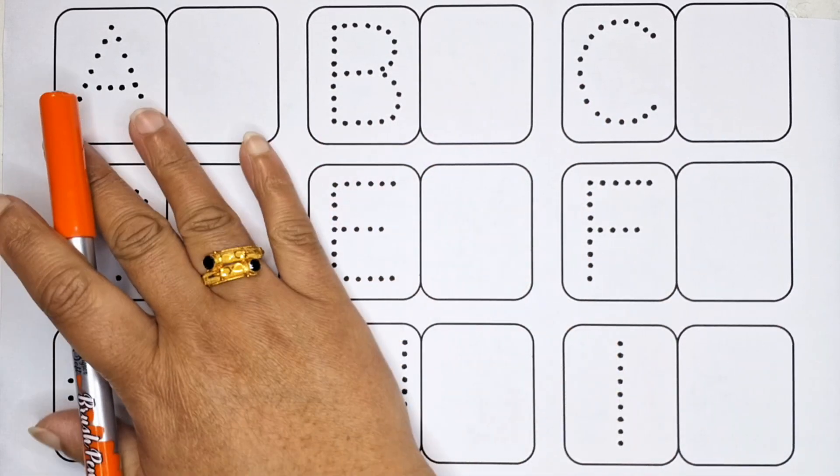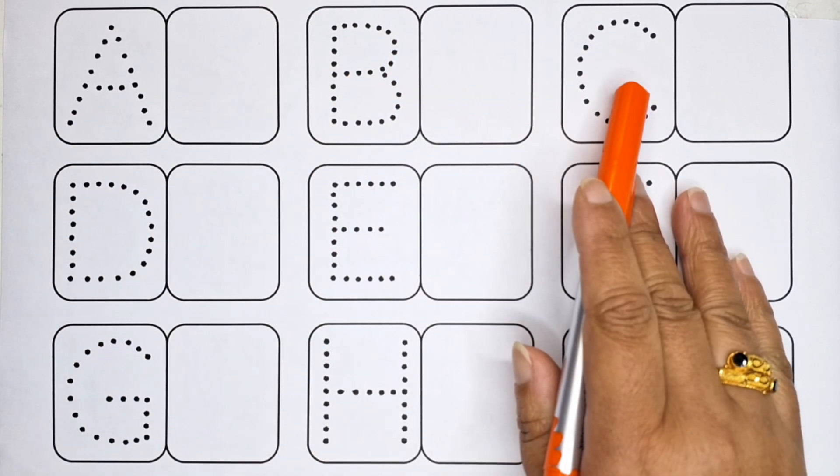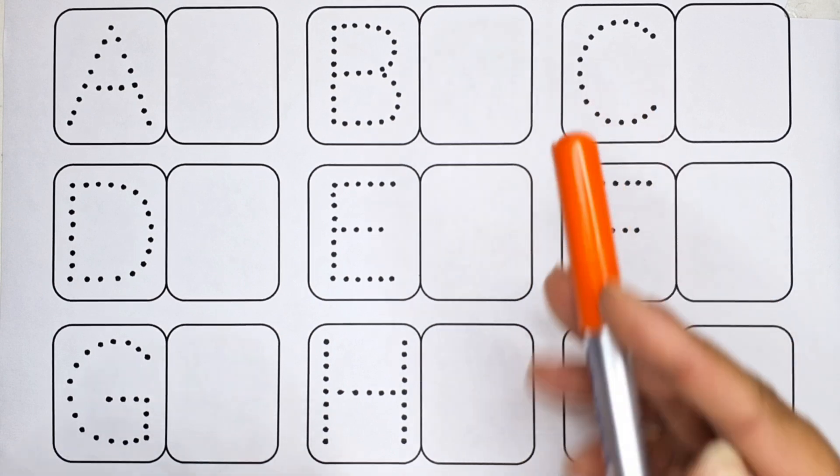Today we'll be learning alphabet letters. A for apple, B for ball, C for cat. So, let's start.